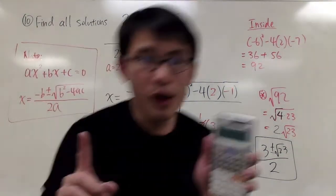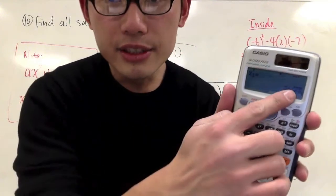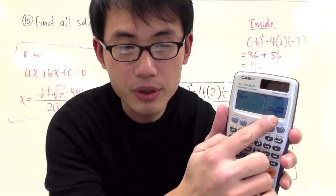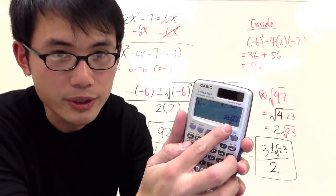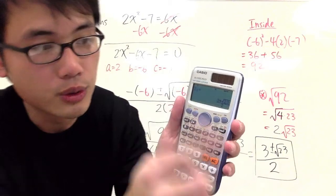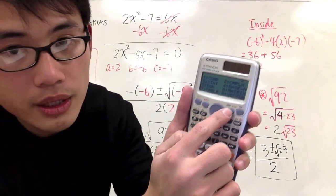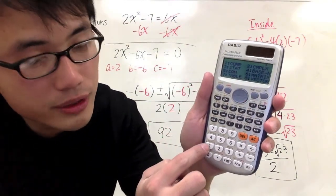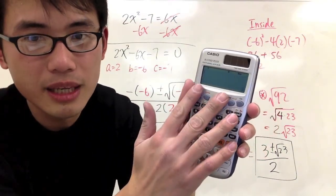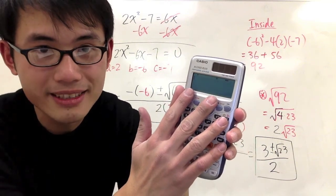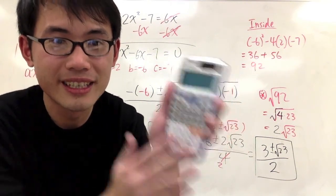Before I go, one important thing: we still have x1 showing — you need to exit the quadratic equation mode. To do that, press Mode and choose number 1. This gets you back to the normal calculator mode for regular computations.